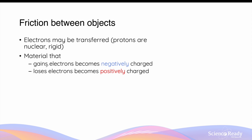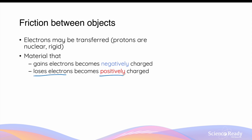When objects are rubbed together, the friction created between them can cause electrons to be transferred between the objects. It is very important to understand that only electrons are transferred in this process, because electrons in atoms are mobile as they orbit the nucleus, whereas protons reside in the nucleus and are more rigid, so they are not able to be transferred between objects.